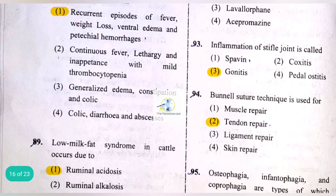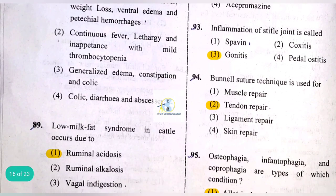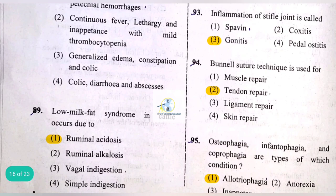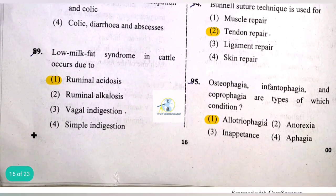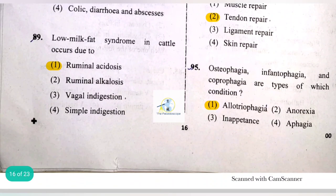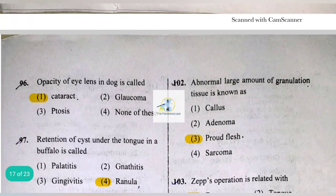Inflammation of the stifle joint is called gonitis. The Bühner suture technique is used for tendon repair. Osteophagia, infantophagia, and coprophagia are types of the condition known as allotriophagia.